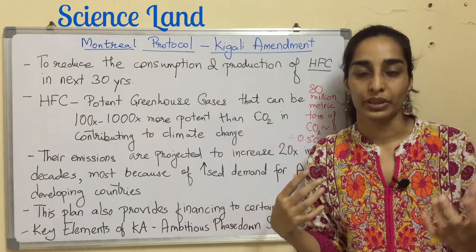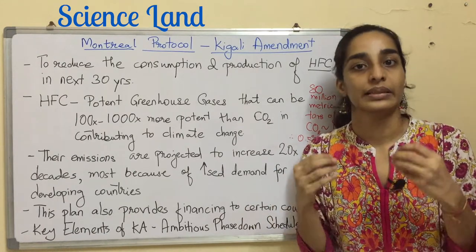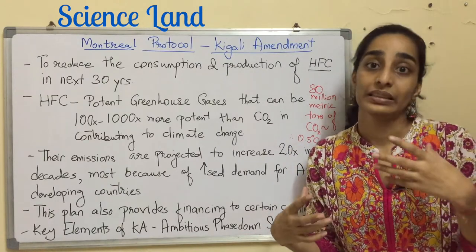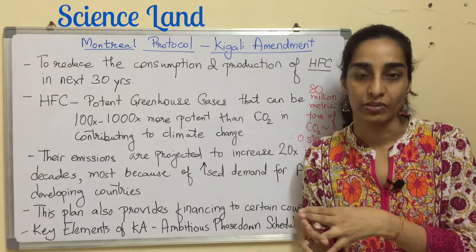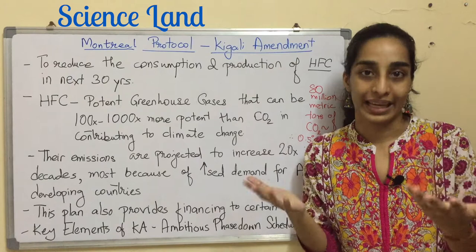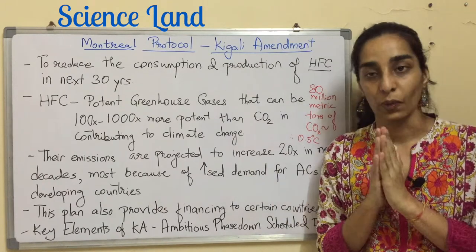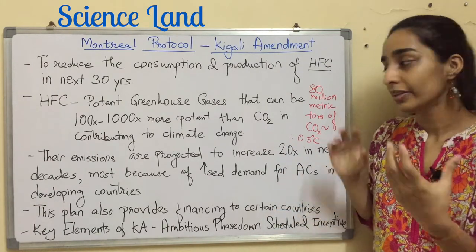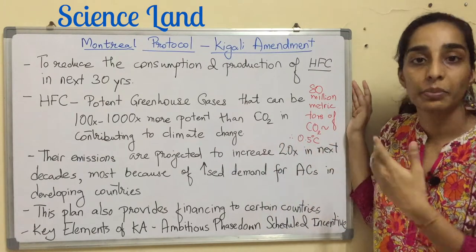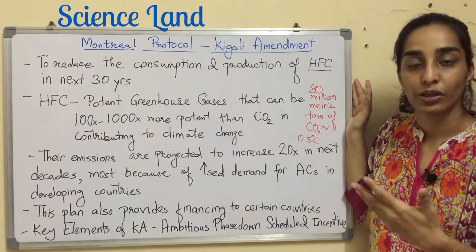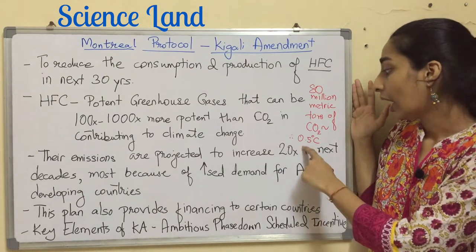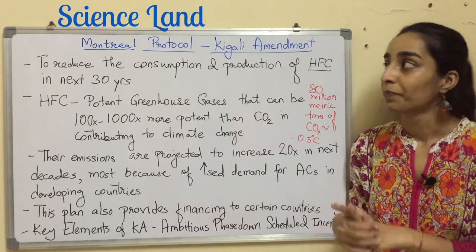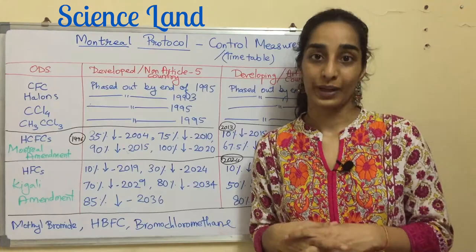There are certain key elements of the Kigali Amendment: first, an ambitious phase-down schedule for both developed and developing countries; second, incentives given if a nation takes early action ahead of the proposed schedule; and third, a flexible and innovative structure. If implemented successfully, it is estimated that the Kigali Amendment will reduce 80 million metric tons of CO2 equivalent emissions by 2050, thereby avoiding 0.5 degrees Celsius of warming by the next decade.